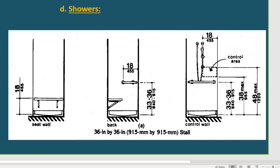For the shower, a common design feature is a folding bench on the side so the user can sit. The bar distance from the wall is 18 inches, and the bar height is 33 to 36 inches — the same numbers used for the bathtub.